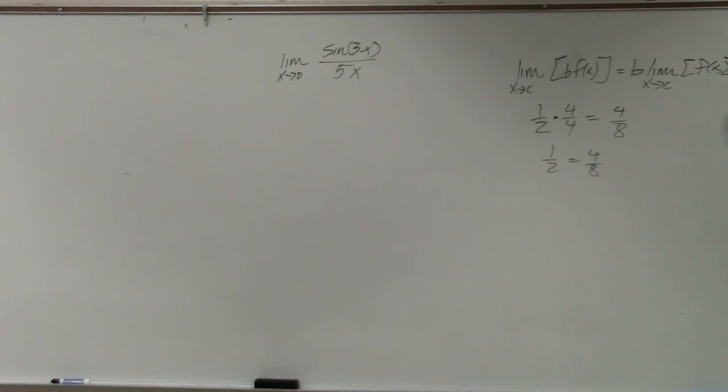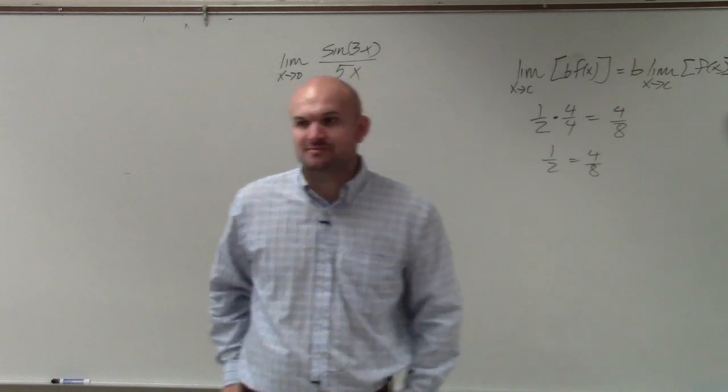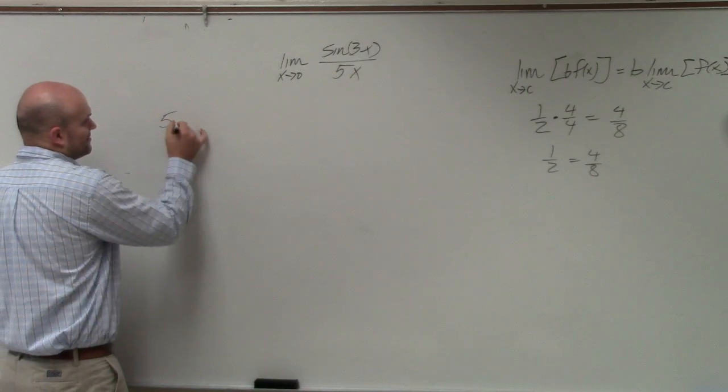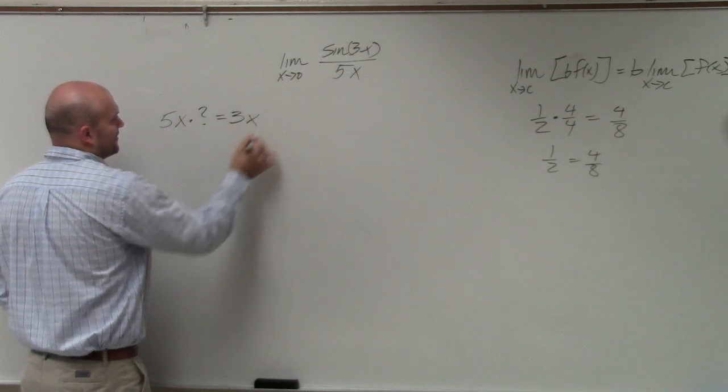I'm going to do this to get that 5x to be a 3x. Does anybody have any idea what I should multiply 5x to get me to be 3x? Let's see. 5x times what number equals 3x?